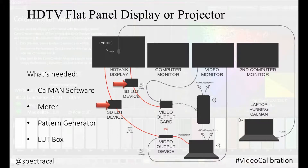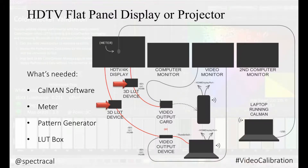The best way to do it is to add a LUT device, like an IS Mini by Fujifilm or an AJA LUT box. The benefit is that you can have a calibrated monitor for any application you're using, versus just the one application that has the corrected 3D LUT.